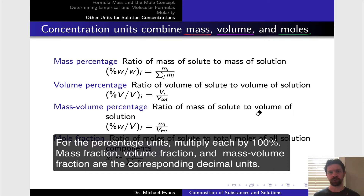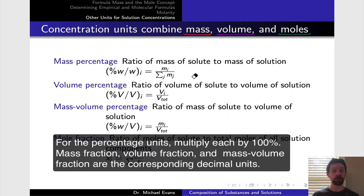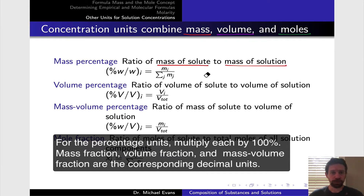The mass percentage concentration is the ratio of the mass of a solute to the total mass of the solution. Masses are additive, so we can find the total mass of the solution by summing all the masses of the individual components. This sum over j includes all the solutes and the solvent masses, and so the mass percentage of component i is the mass of that component divided by the sum total — the mass of solute divided by the mass of the solution.